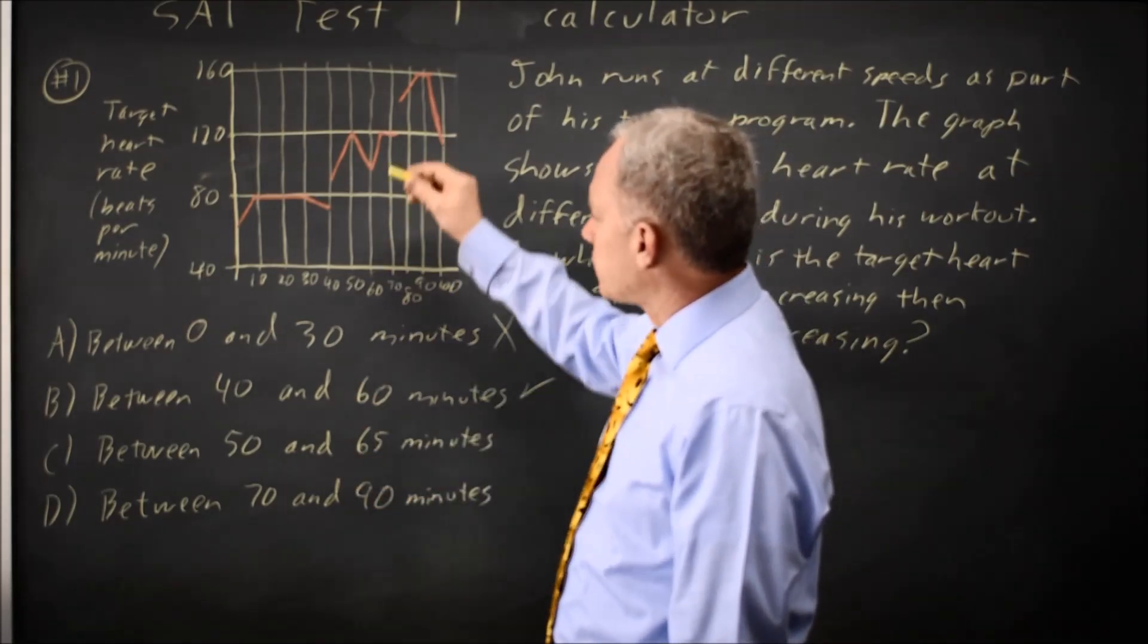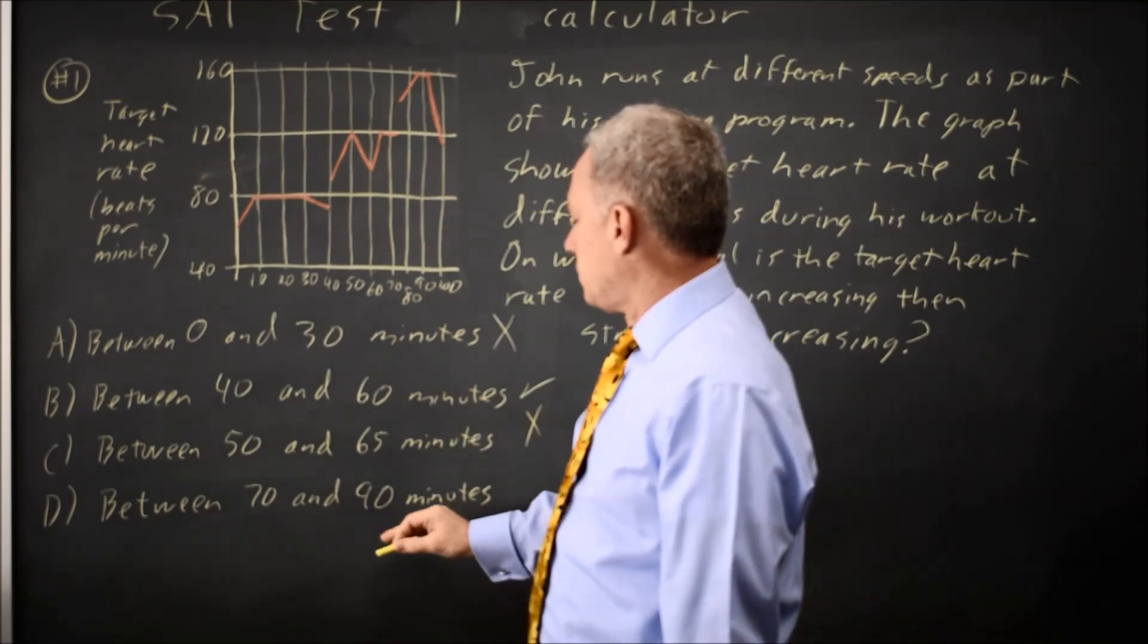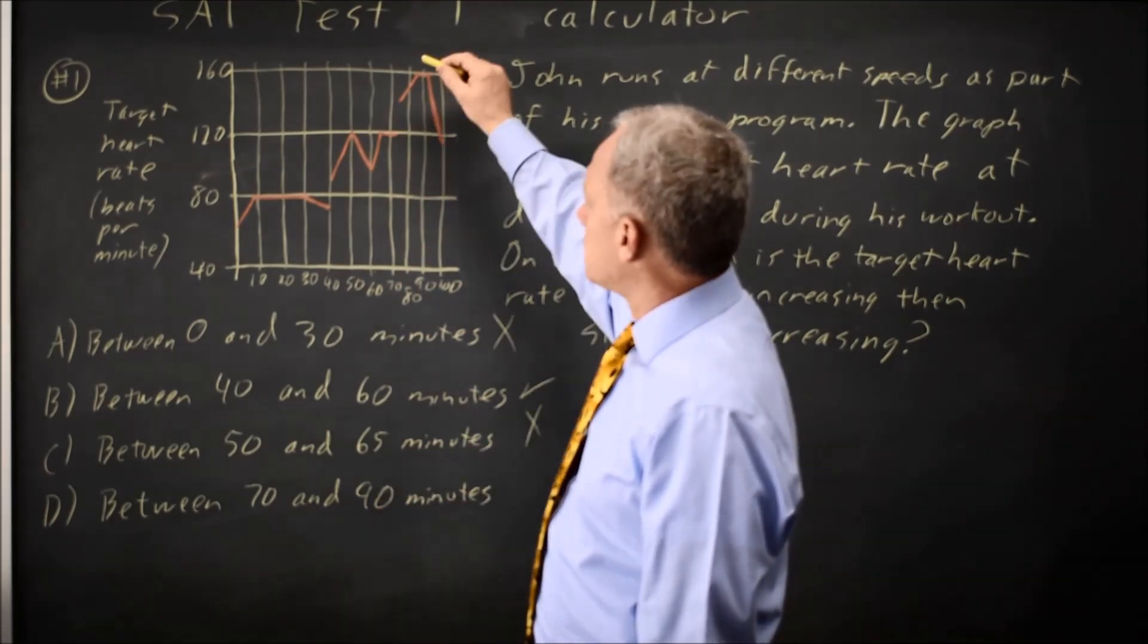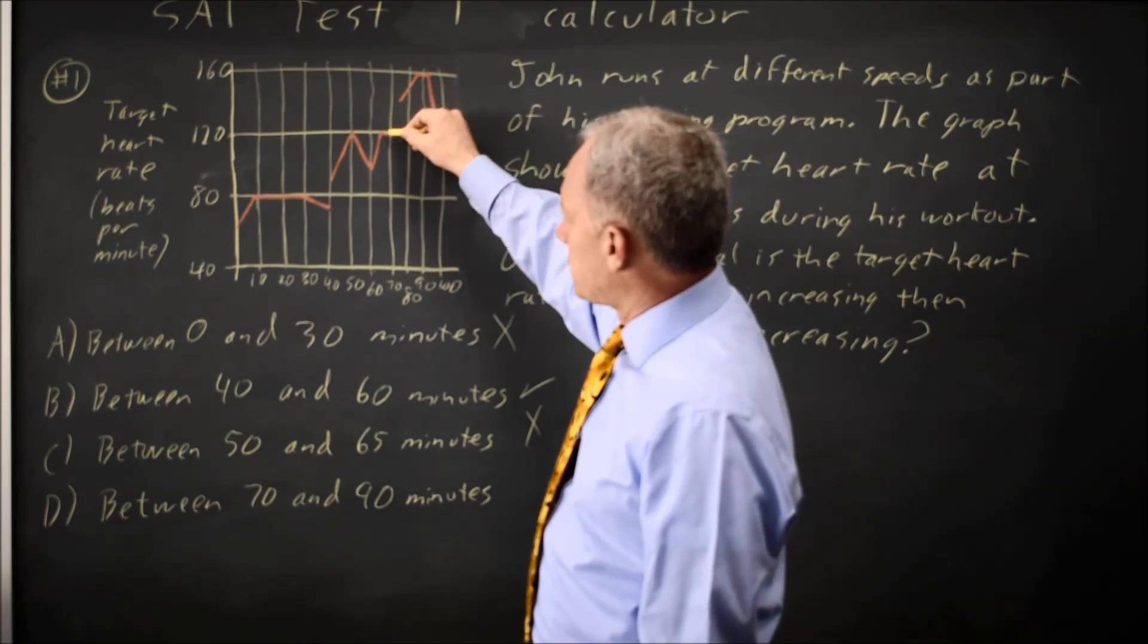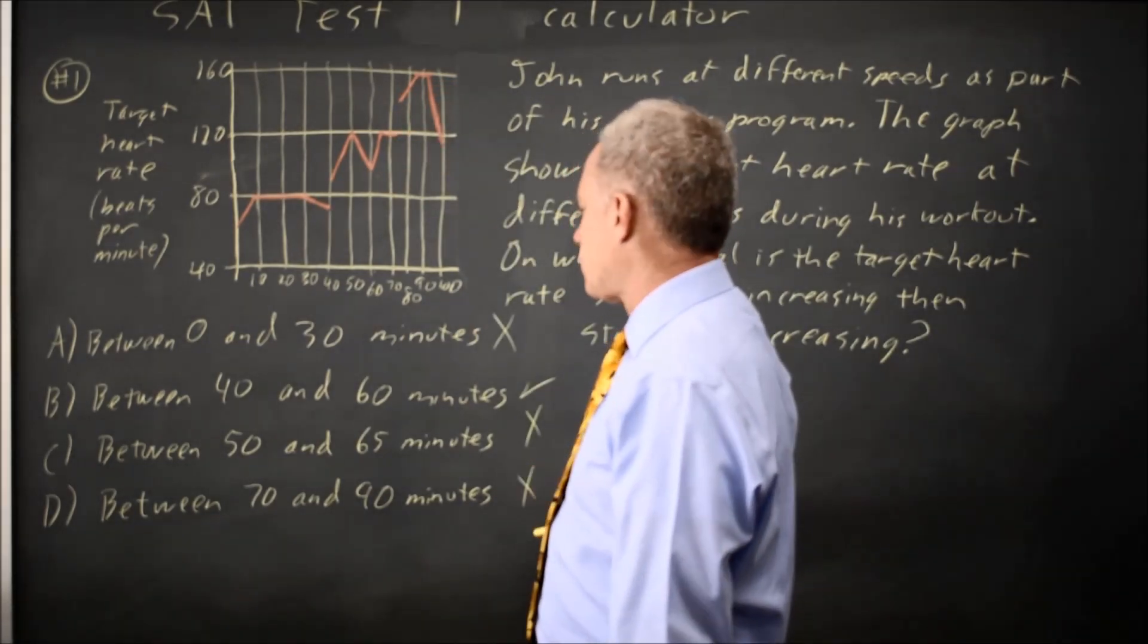From time 50 to 65, 50 to 60 we're decreasing not increasing so that's wrong, and times 70 to 90, 70 to 75 is constant that's not strictly increasing so that's wrong.